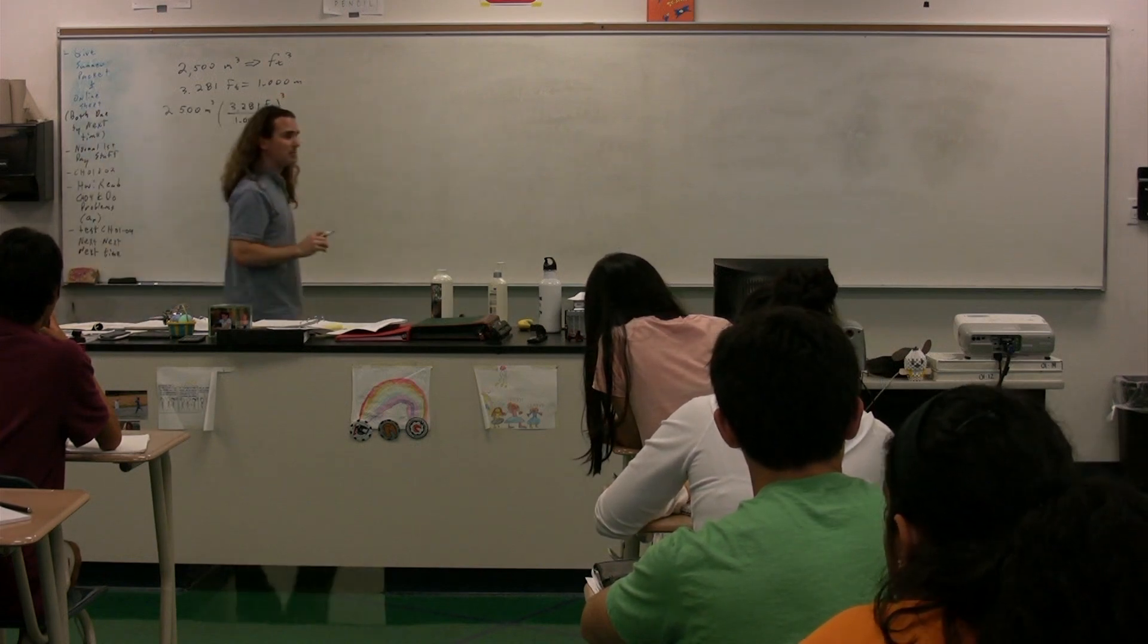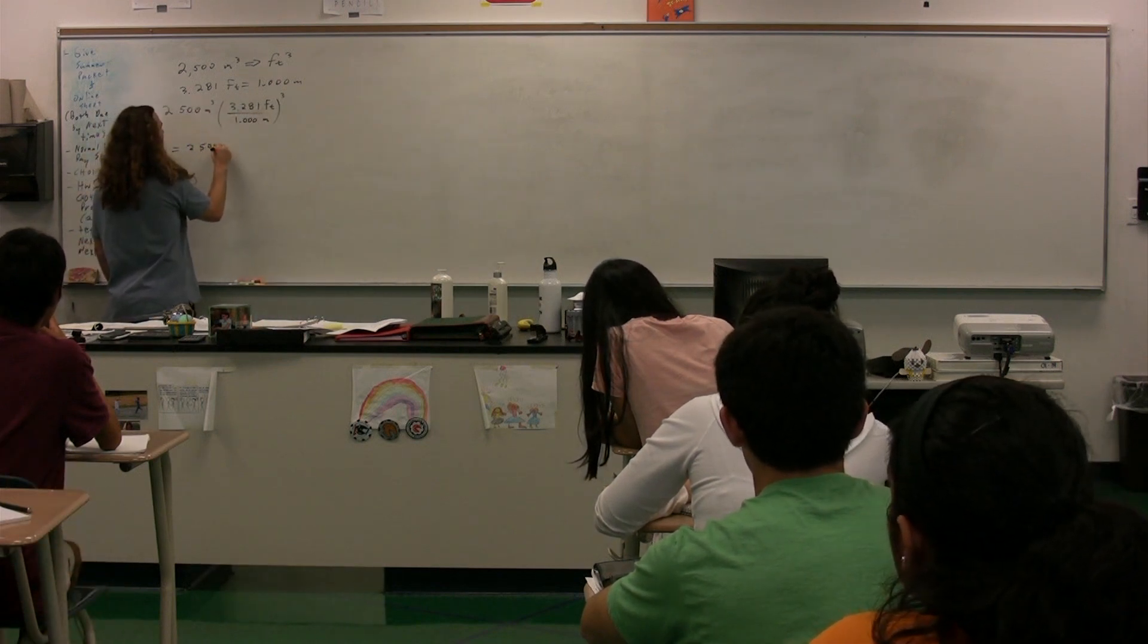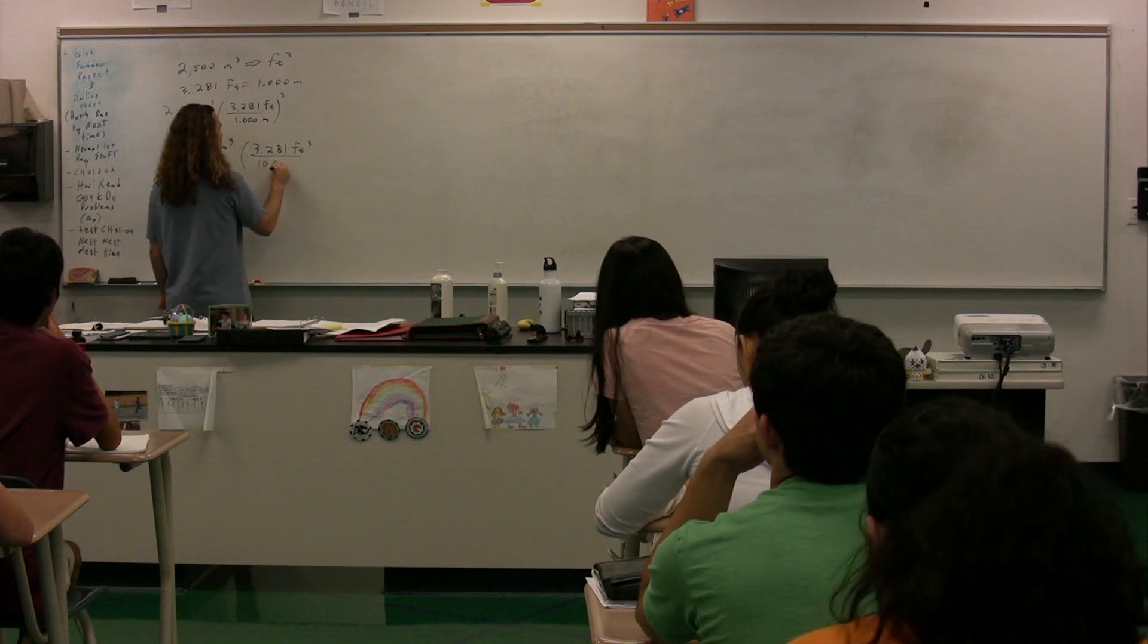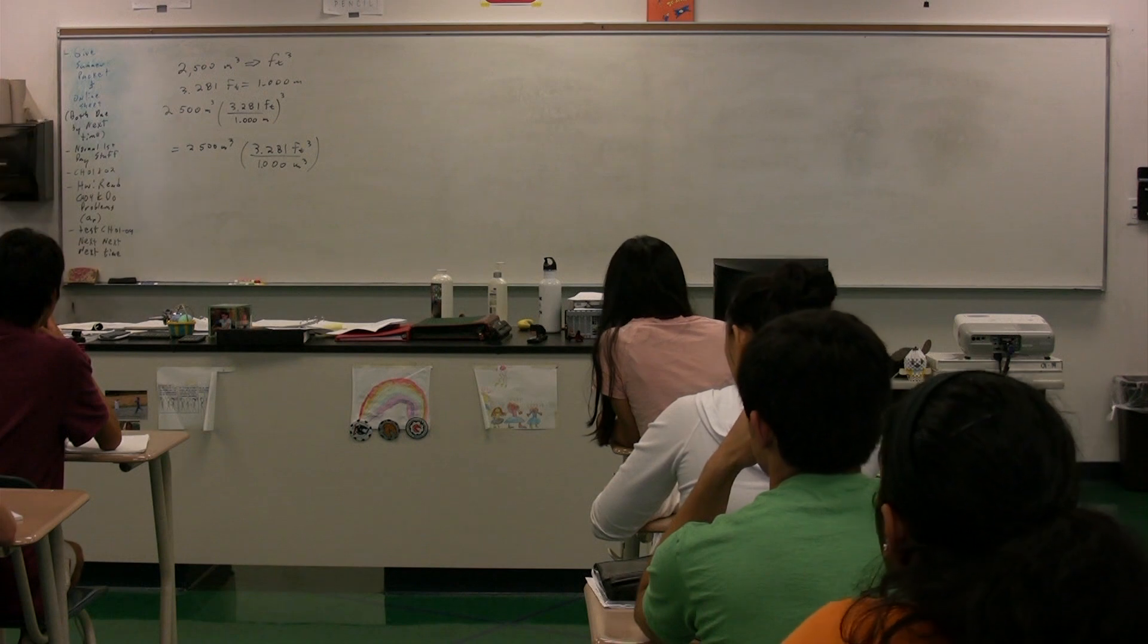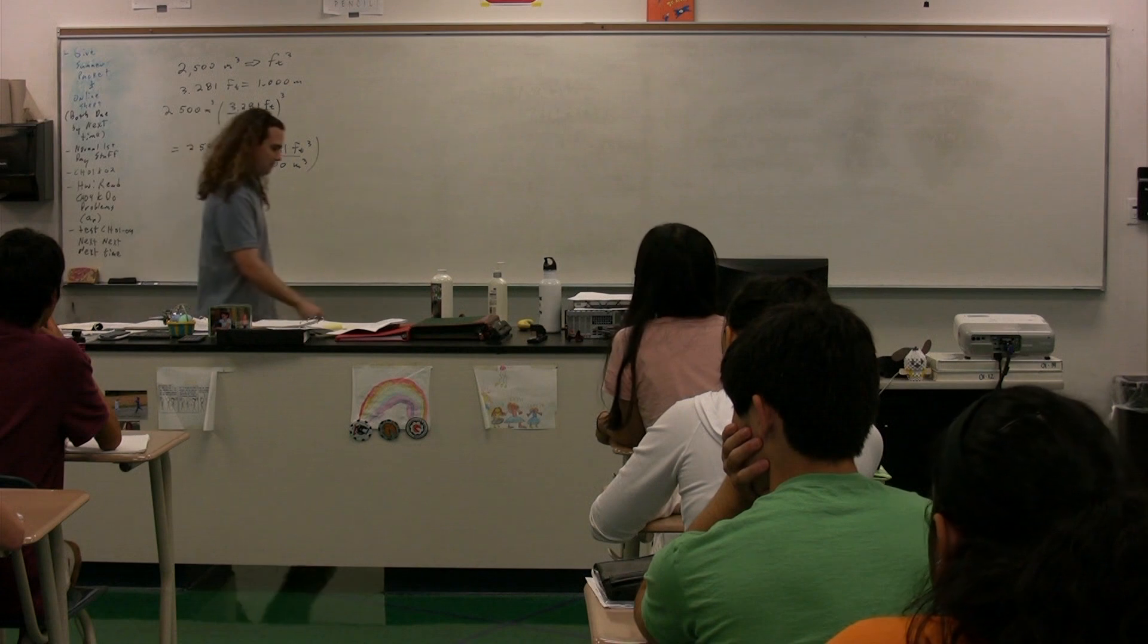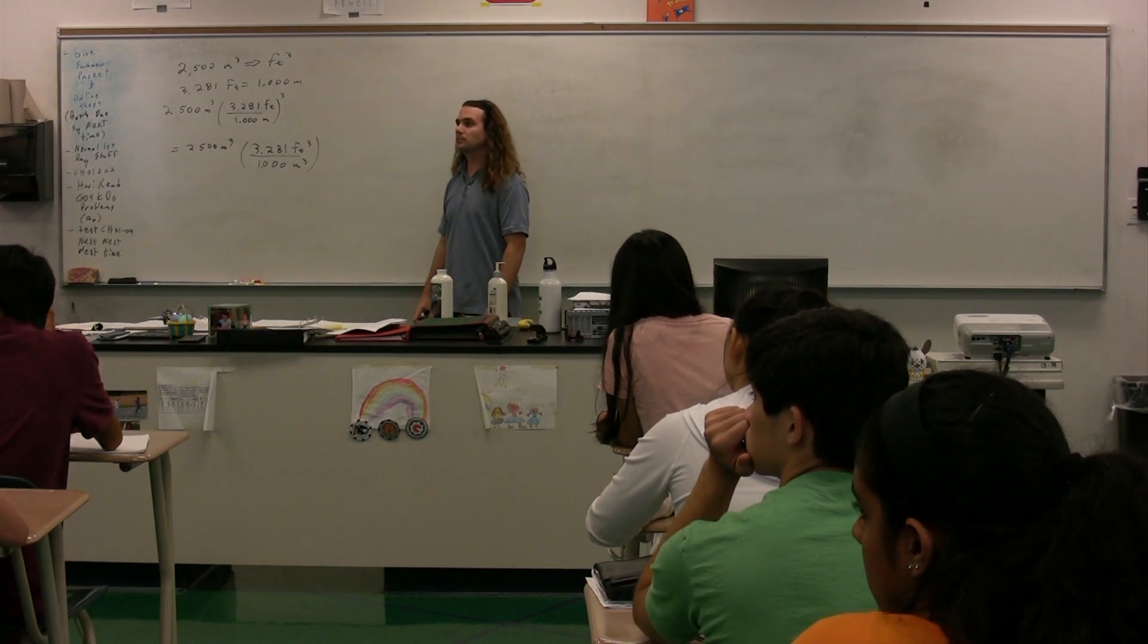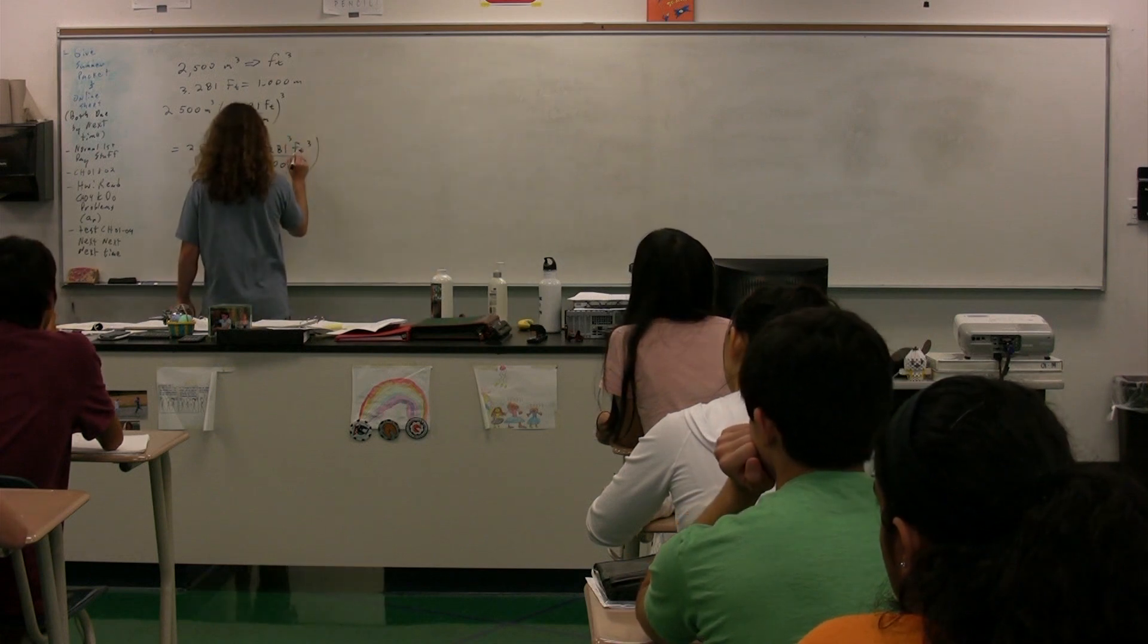But we've got to be careful because this is where people make a mistake. People will often do this and say, okay, let's bring the cube underneath here. We'll do 3.281 feet cubed over 1.00 meters cubed. This is the mistake people generally tend to make. What do we need to do as well? Where's the mistake right here?